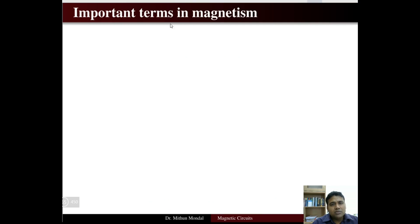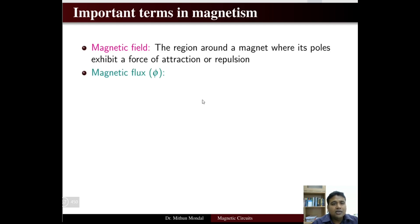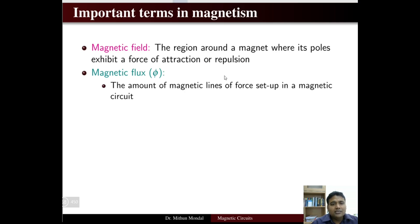Now we will see some important terms that appear repeatedly in magnetism. First, a magnetic field is a region around a magnet where its poles exhibit a force of attraction or repulsion. Magnetic flux, always denoted by phi, is the amount of magnetic lines of force set up in a magnetic circuit — wherever there is a magnetic circuit, magnetic lines of force will exist and the amount is measured as flux.